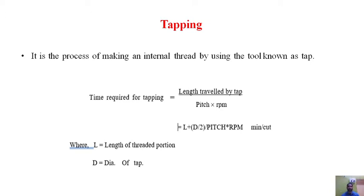The time required for tapping is given by the length travelled by the TAP. The total length travelled divided by pitch of the thread multiplied by RPM of the TAP. That is given by (n + d/2) divided by (pitch × RPM), where n is the length of the threaded portion and d/2 is the extra movement of the TAP — some clearance before the start and after the end of the thread — where d is the diameter of the TAP.